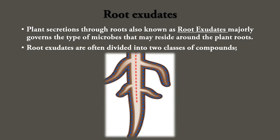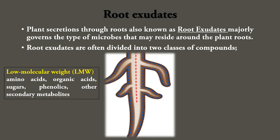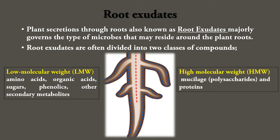Plant roots release certain chemical molecules in the soil which attract various microbes. These root secretions are called root exudates, and they govern the type of microbes that may reside around the plant roots. Root exudates are often divided into two classes of compounds: low molecular weight and high molecular weight organic compounds.